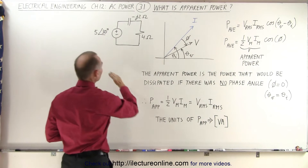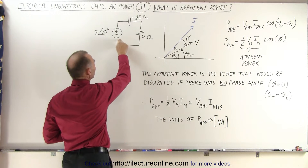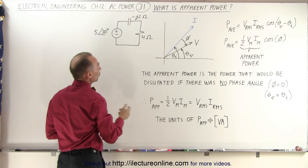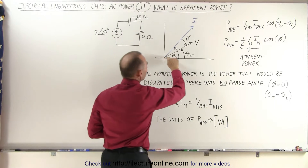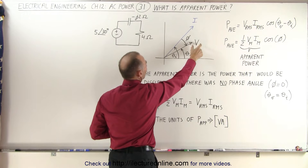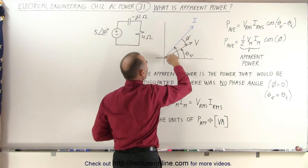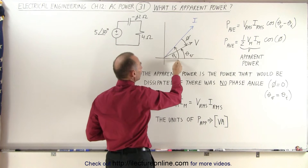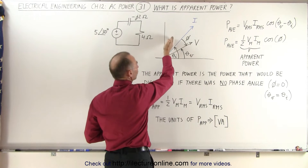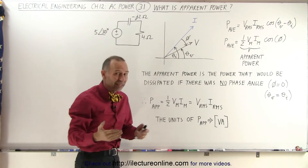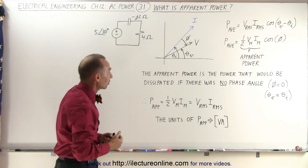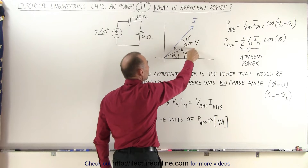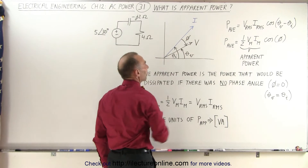If we take a look over here, we have a simple circuit with a voltage supply, a capacitor, and a resistor. Notice that in this particular circuit, this phasor here represents the voltage, and this phasor here represents the current. Notice that this is the phase angle for the voltage and the phase angle for the current. Since the current leads the voltage, you can see that this would be a capacitive circuit, and the phase angle between the current and the voltage is going to be a negative phase angle.